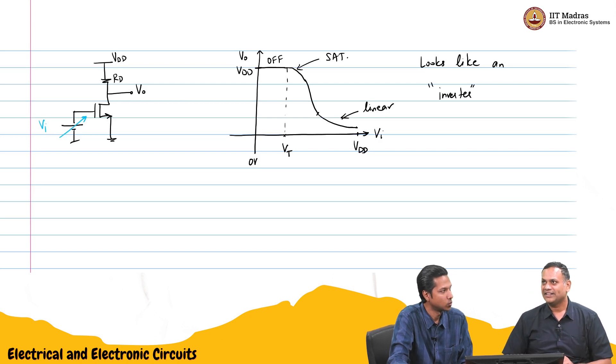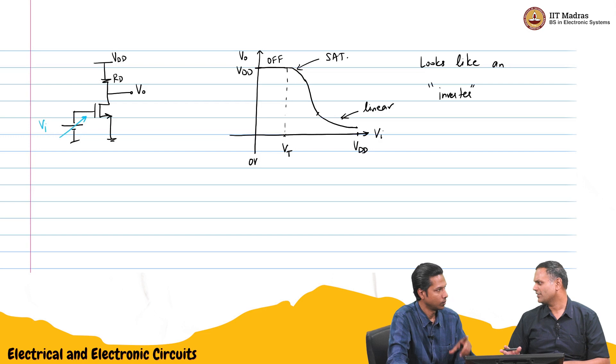And then we compared biasing. We added drain resistor to bias the drain. We add a gate resistive divider to bias the gate. Source resistor, we said because it is quadratic we do not need the resistor. Maybe I will quickly draw that circuit. We will start from that.